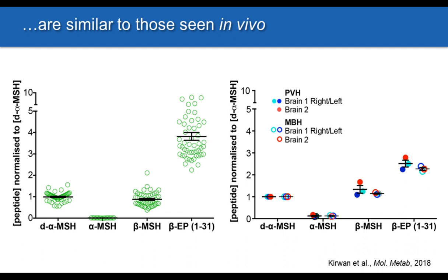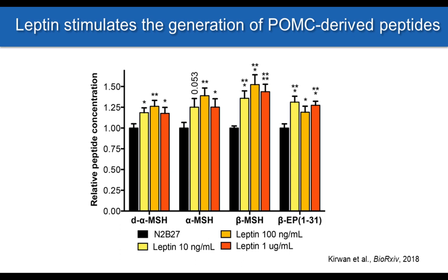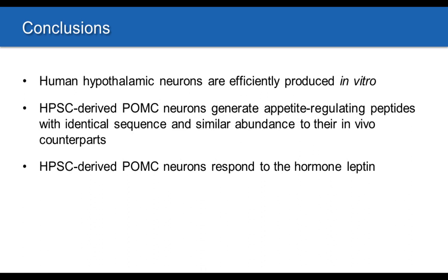Since we have access to live human hypothalamic neurons — which we don't from postmortem material — we can ask whether the production of these neuropeptides is altered in response to hormones such as leptin. We incubated our cultures with leptin and found a robust induction of both alpha-MSH, beta-MSH, and beta-endorphin. This really establishes this culture system as a powerful tool to study human metabolic sensing. In summary: human hypothalamic neurons are efficiently produced in vitro, POMC neurons generate appetite-regulating peptides with identical sequence and similar abundance to primary human brain tissue, and these cells actively respond to leptin.